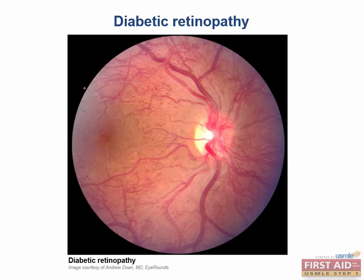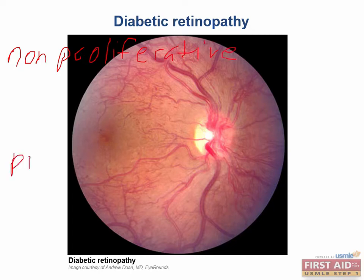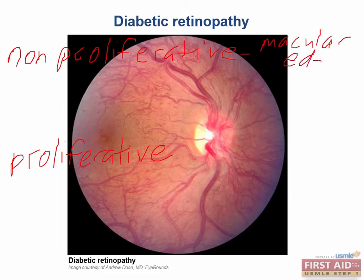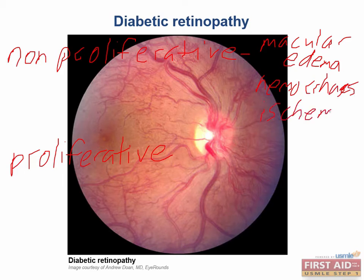Diabetic retinopathy occurs in two stages: a non-proliferative stage and a proliferative stage. The non-proliferative phase usually consists of macular edema, hemorrhages, as well as retinal ischemia.